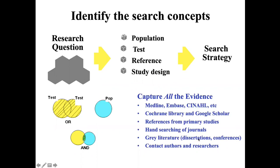And then searching the gray literature — for example, doctoral theses or conference abstracts — is another challenge. Finally, you may have to contact authors directly, seeking them to give you information about any citations they know of which have not been captured by your own search. So carrying out the second step of a systematic review, which is to carry out your literature search, is not something you can do in one afternoon. It is quite a time-consuming step. It requires a strategy, and it is this strategy that allows you to succeed in capturing as many of the relevant citations and papers as there are that cover your research question.